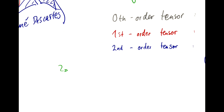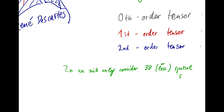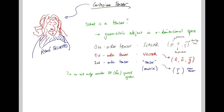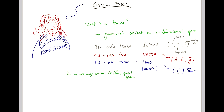In our class here, we will only consider 3D or even less spatial systems. So all these zeroth order, first order, and second order tensors that we will talk about will always be in the framework of 3D — the world as we experience it. Nothing crazy mathematically abstract.